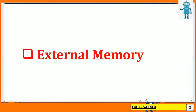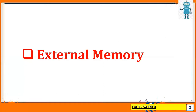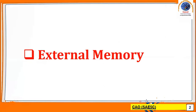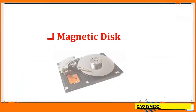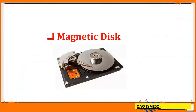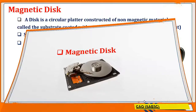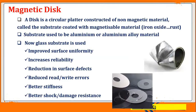In those aspects, we are going to see the magnetic disc. What is a magnetic disc? A magnetic disc is a circular platter which is constructed of a non-magnetic material which is coated with a magnetizable material, which is iron, iron oxide, etc.